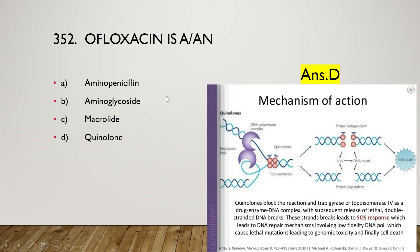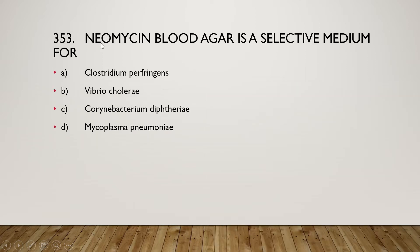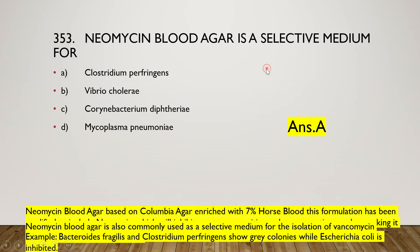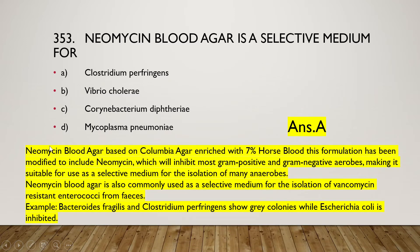Next question: neomycin blood agar is a selective medium for Clostridium perfringens, Vibrio cholerae, Corynebacterium diphtheriae, or Mycoplasma pneumoniae? The right answer is option A, Clostridium perfringens. Neomycin blood agar is used as a selective medium for Clostridium perfringens, based on Columbia agar enriched with 7% horse blood.